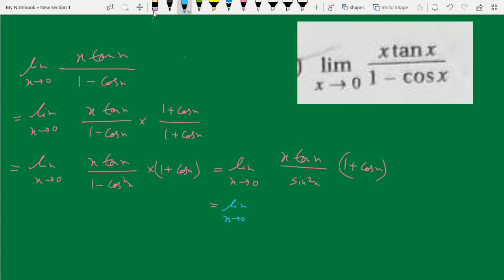Limit x tends to 0, 1 plus cos x. Limit x tends to 0, tan x by sin square x by x square into x.